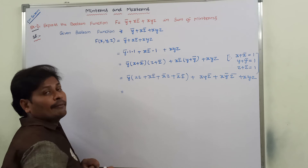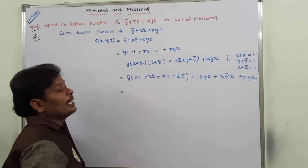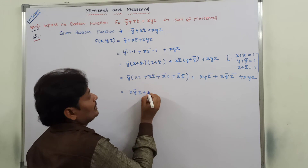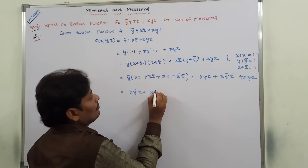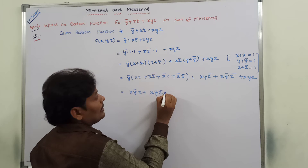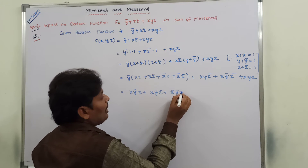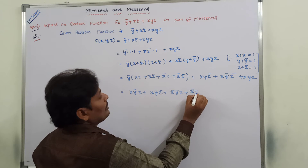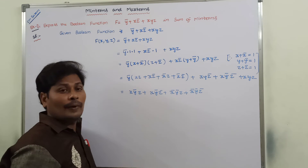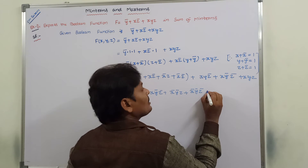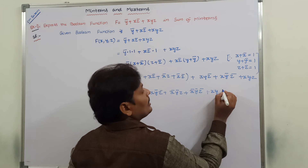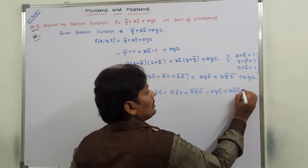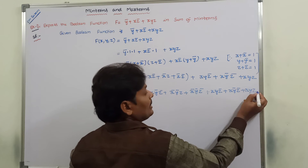Multiplying ȳ into all terms within the parenthesis, we get: xȳz, xȳz̄, x̄ȳz, and x̄ȳz̄. Combined with the second and third product term expansions, the full expression becomes: xȳz + xȳz̄ + x̄ȳz + x̄ȳz̄ + xyz̄ + xȳz̄ + xyz.